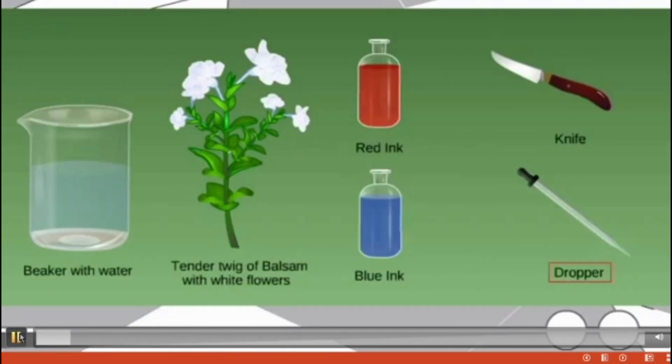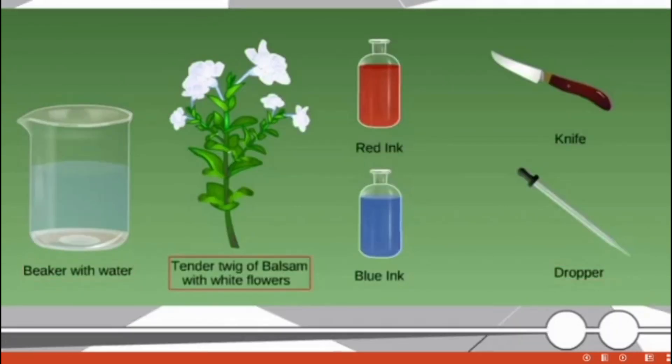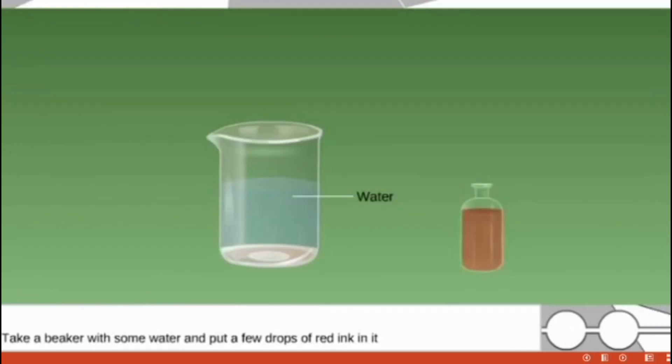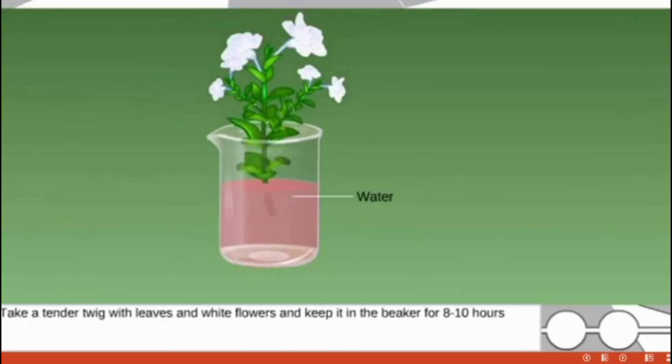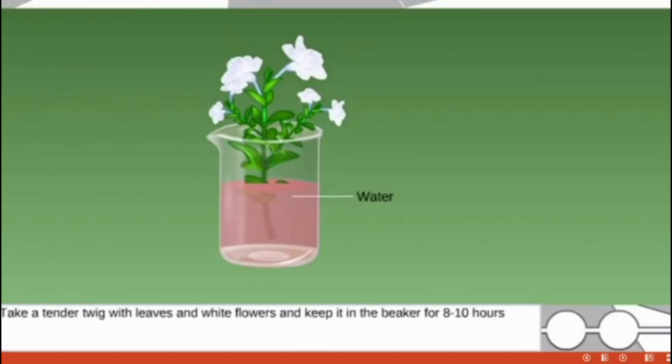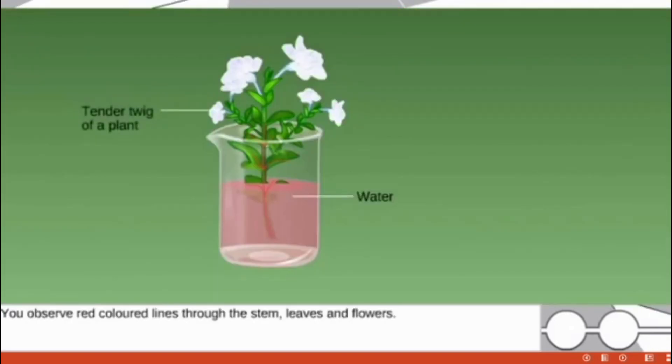Method of recall: beaker with water, tender twig of balsam with white flowers, red ink and blue ink, sharp knife, dropper. Method A: Take the beaker along with water, add few drops of ink, and insert the leaf stick with the flowers in undisturbed condition for 8 to 10 hours.